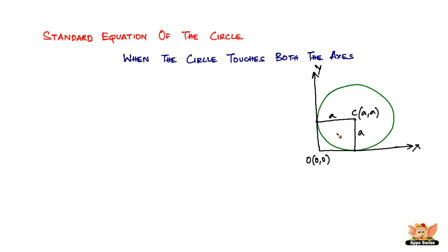It will actually be like this: this will be h, which is also equal to a now. This will be k, which is also equal to a. A is the same as k, and a is the same as h also. So therefore, the major change as far as the standard equation of the circle when the circle touches both the axes is that h equals k, and both of them equal a.